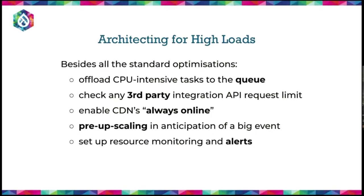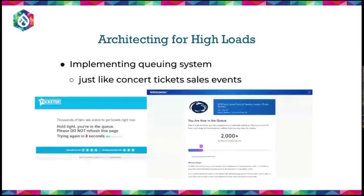Pre-scaling is cheaper than ending up in the news. Also set up monitoring and alerts for traffic spikes so you can manage incoming traffic proactively. Another option is implementing a virtual queuing system — like Ticketmaster does — so that users are queued and your system doesn't crash when large numbers try to access it simultaneously.